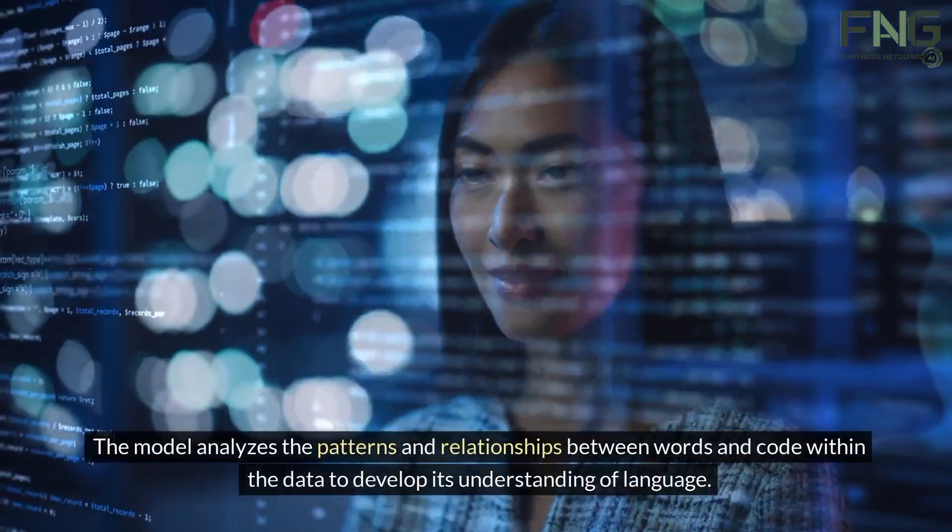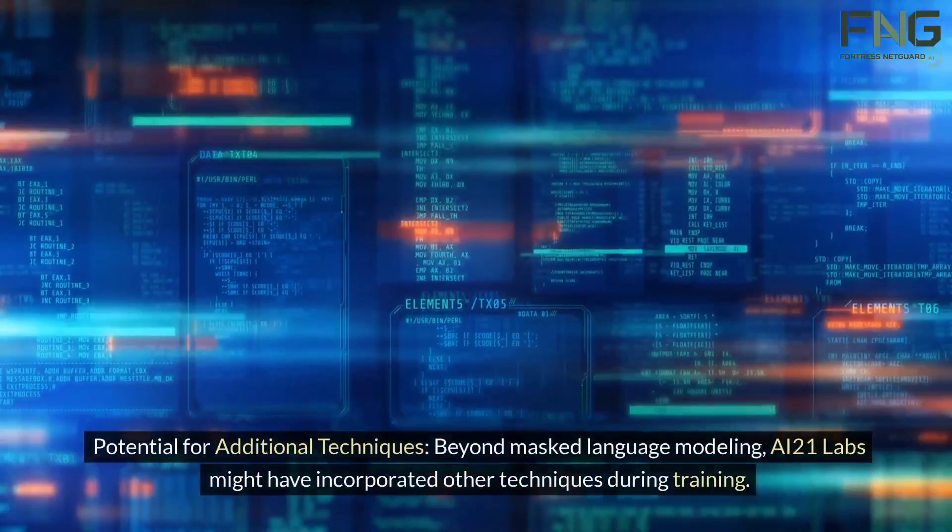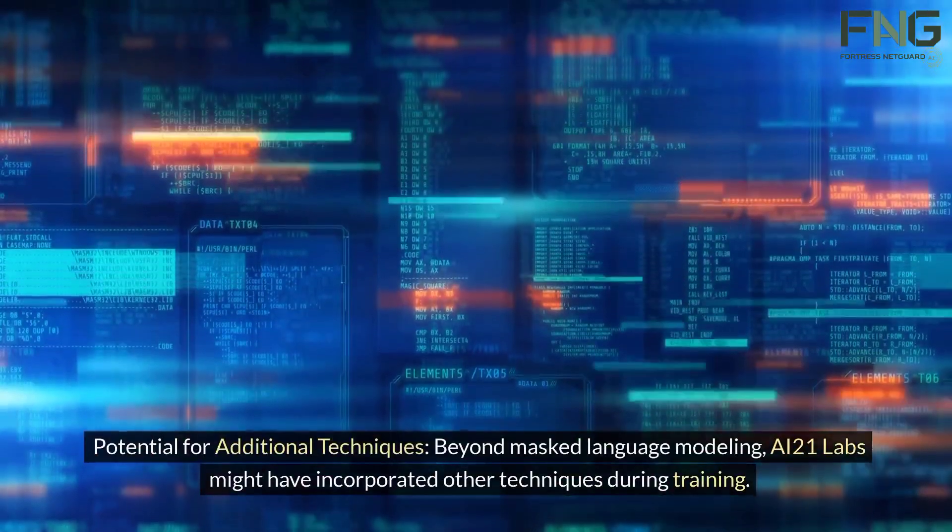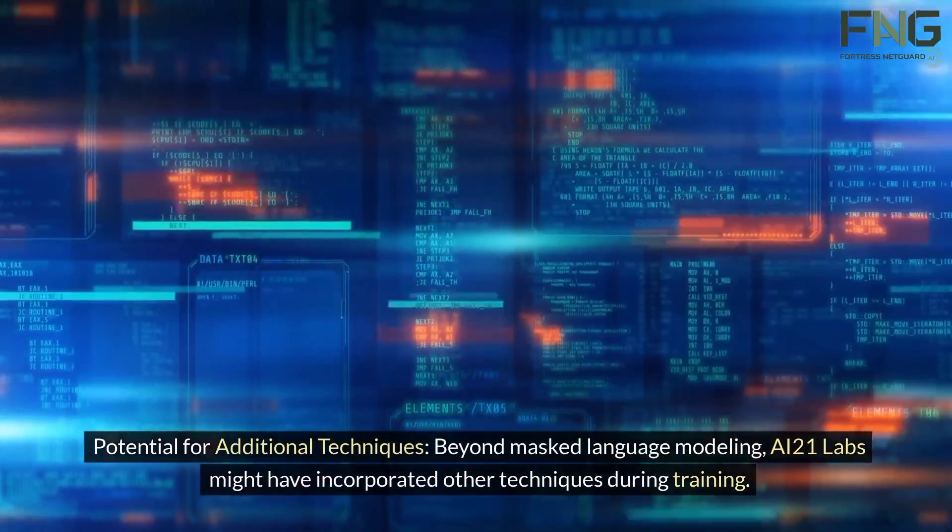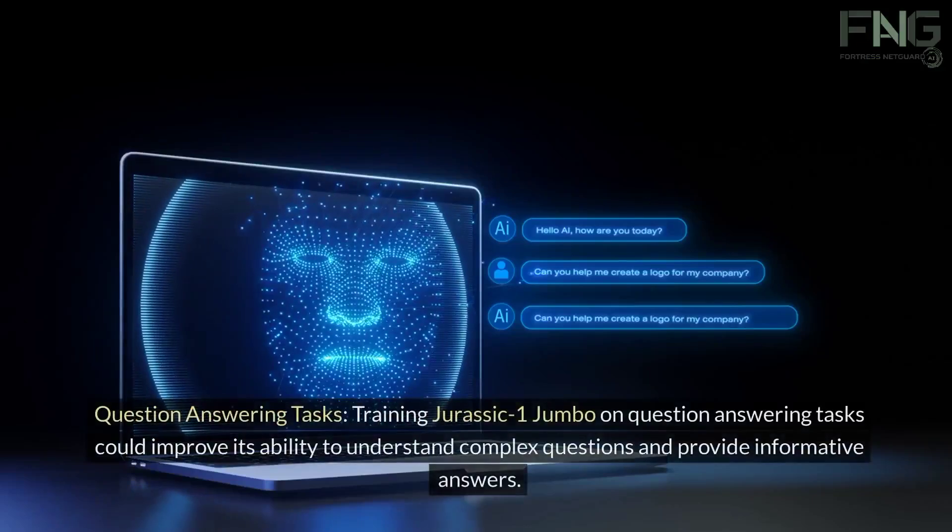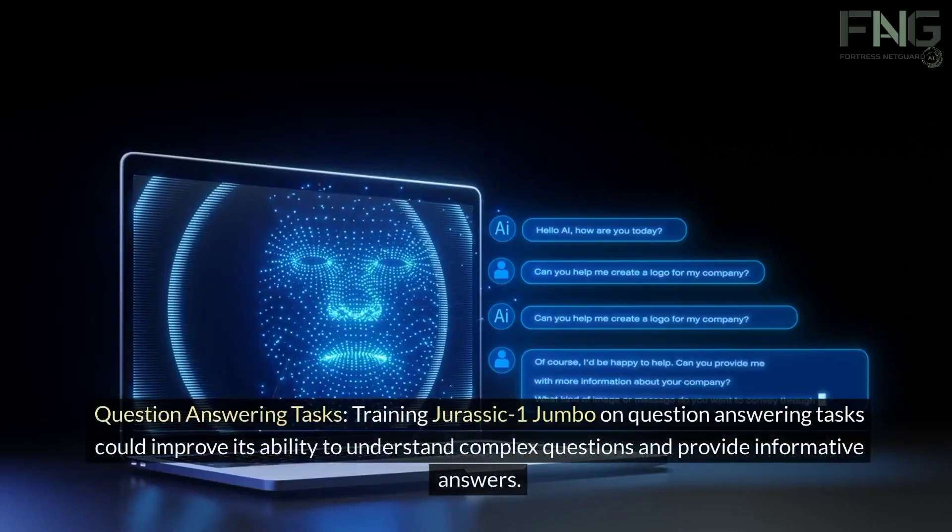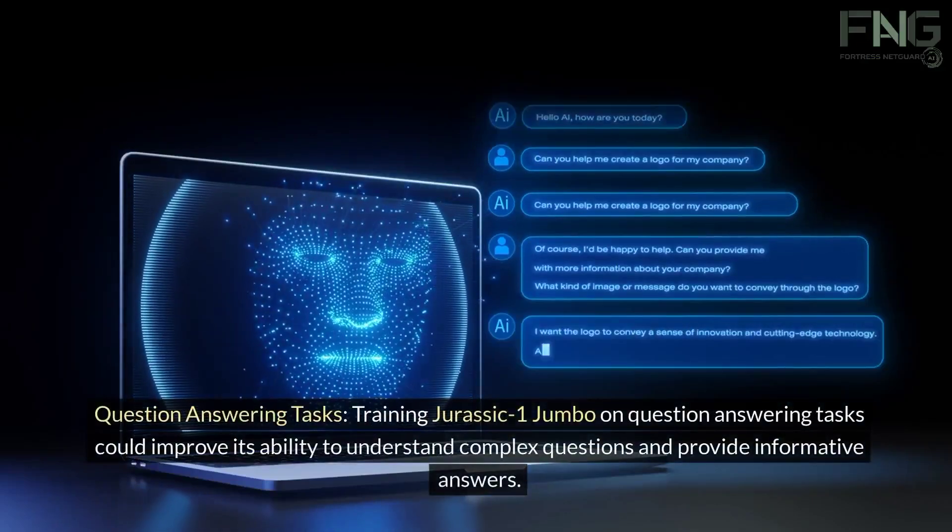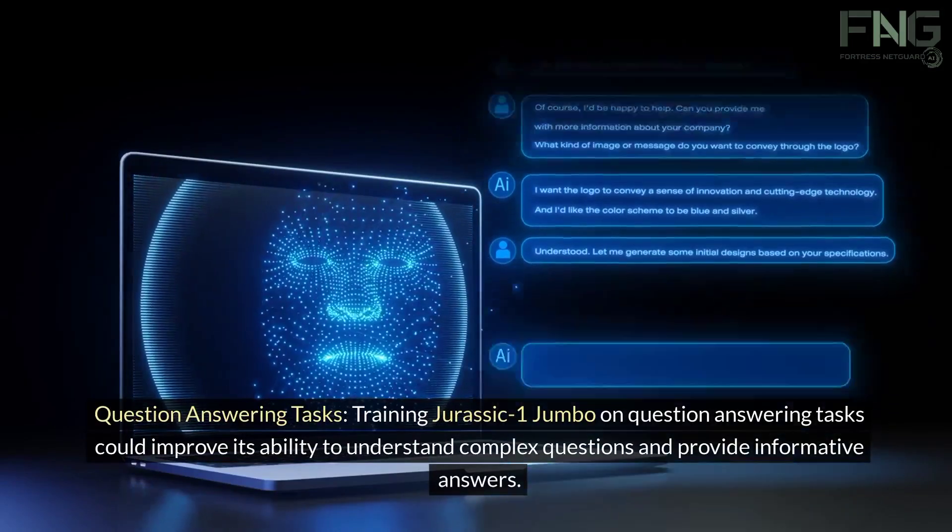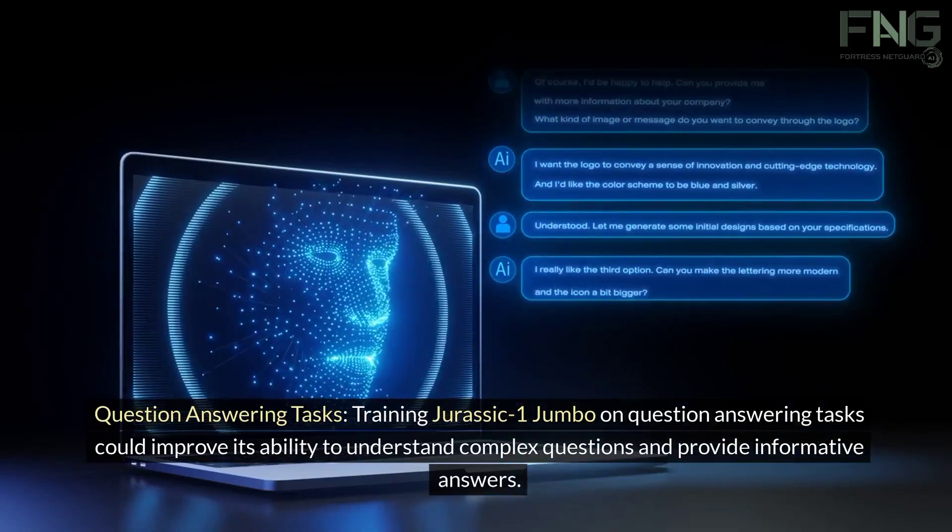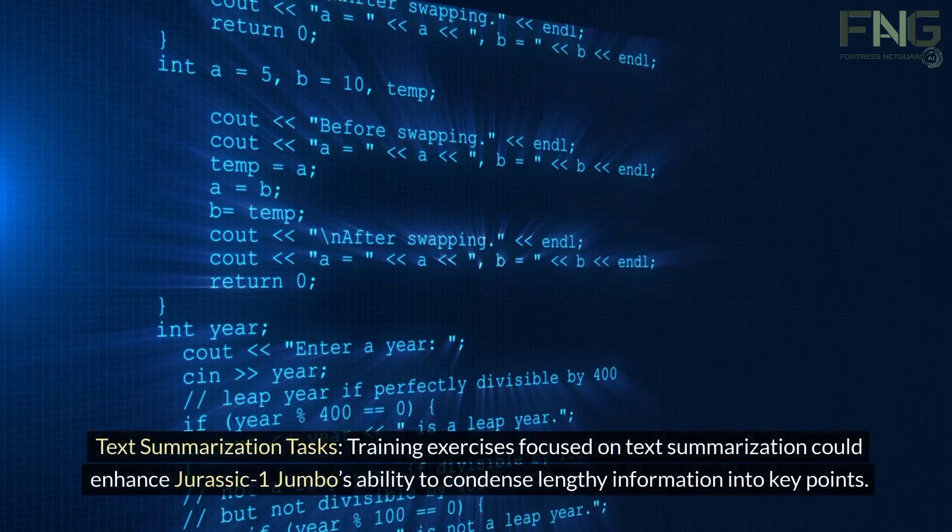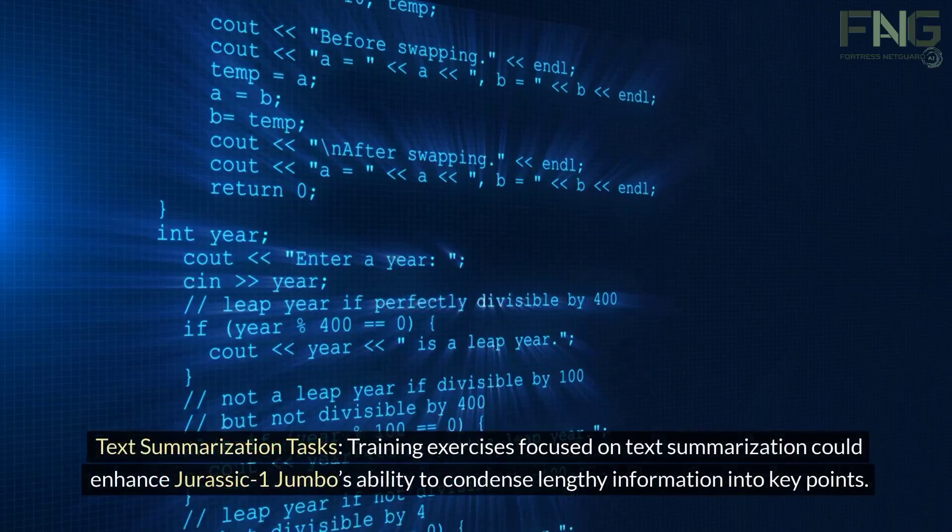Potential for additional techniques beyond masked language modeling: AI21 Labs might have incorporated other techniques during training. These could involve question-answering tasks—training Jurassic-1 Jumbo on question-answering tasks could improve its ability to understand complex questions and provide informative answers. Text summarization tasks: Training exercises focused on text summarization could enhance Jurassic-1 Jumbo's ability to condense lengthy information into key points.